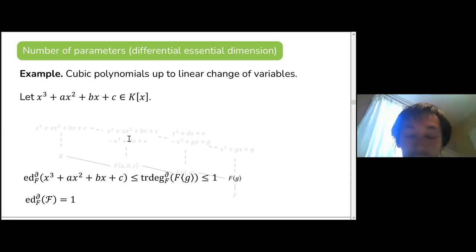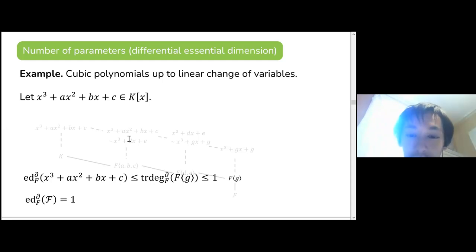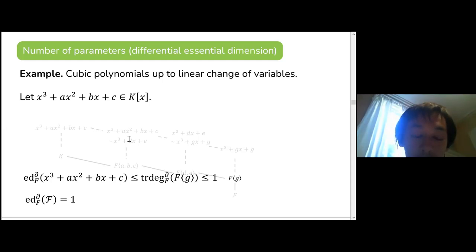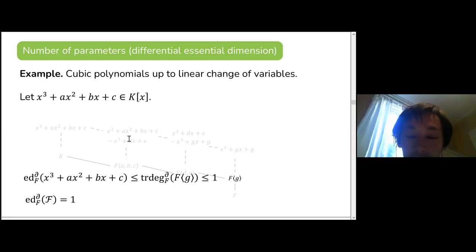The phrase 'descends to' can also be called 'differential field of definition.' The differential essential dimension of an individual object is the differential transcendence degree of its differential field of definition.